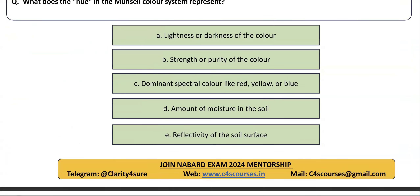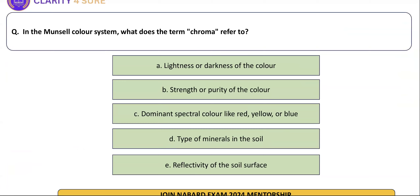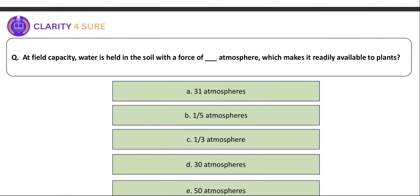What does hue in the Munsell chart represent? In the Munsell color system HCV — Hue, Chroma, Value — hue represents spectral color, value represents lightness, and chroma represents purity of color. In the Munsell color chart, what does the term chroma refer to? Chroma represents the purity of the color.